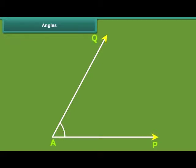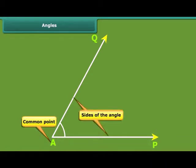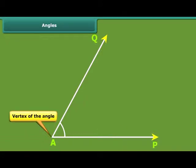In the given angle, ray AP and AQ have a common point A. The two rays forming an angle are called the arms or sides of the angle. The common end point is the vertex of the angle.